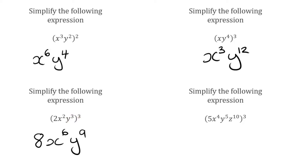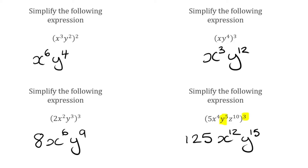For our final question, we've got 5x to the 4 y to the 5 z to the 10, all raised to the power of 3. Starting with 5 raised to the power of 3: 5 cubed is 125. x to the power of 4 raised to the power of 3: 4 times 3 is 12, so x to the power of 12. y to the power of 5 raised to 3: 5 times 3 is 15, so y to the power of 15. And z to the power of 10 raised to the power of 3: 10 multiplied by 3 is 30, so z to the power of 30. Our final simplified expression is 125x to the power of 12, y to the power of 15, z to the power of 30.